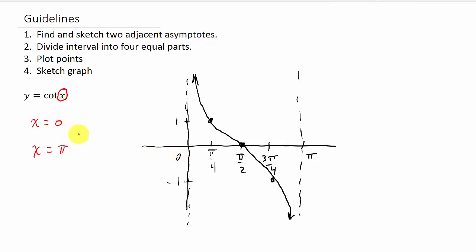Once you have your two adjacent asymptotes — in this case, 0 to pi — we split this interval into four equal regions. We take 0 and pi, find the midpoint which is pi over 2, then find pi over 4 between 0 and pi over 2, and 3 pi over 4 between pi over 2 and pi. Then we plot our points. With cotangent, the first value starts at 1, then goes to 0, then to negative 1 — that pattern holds every time.